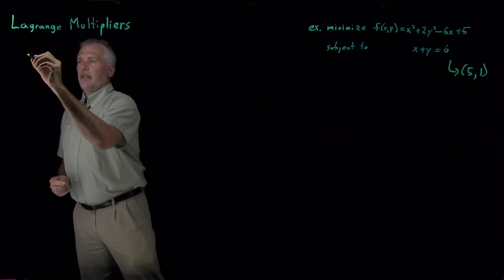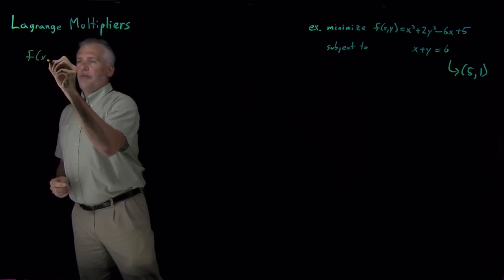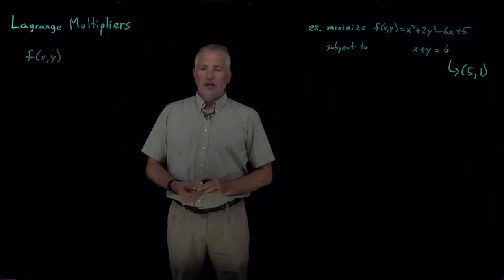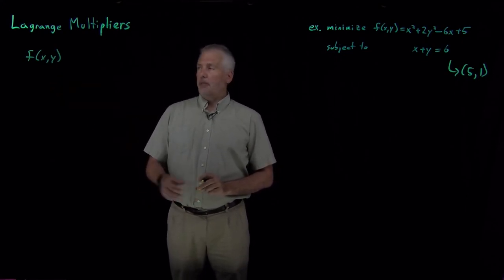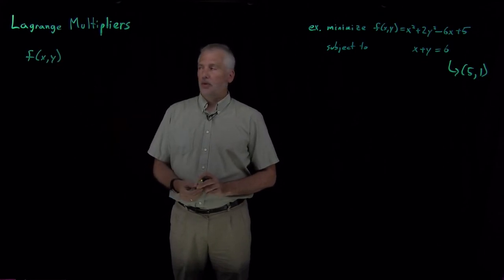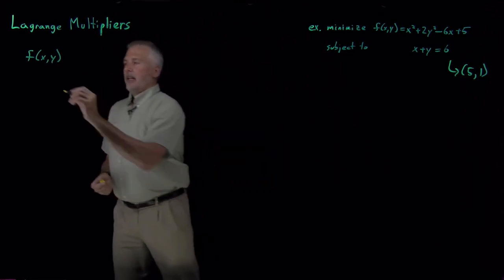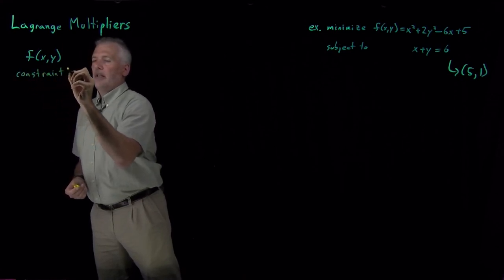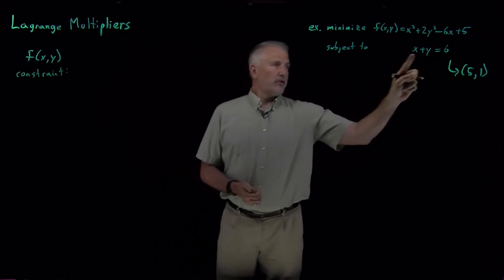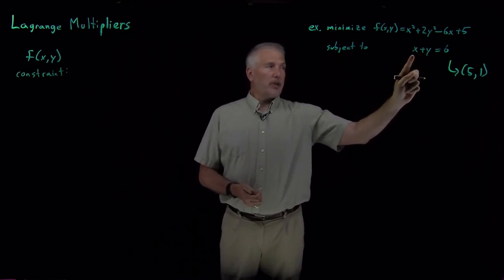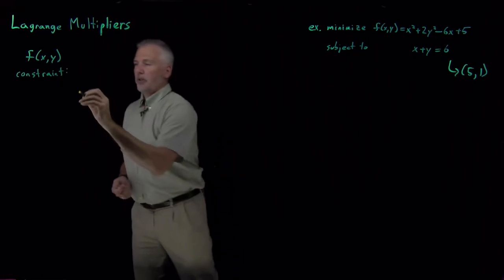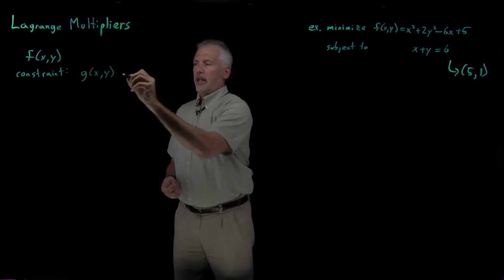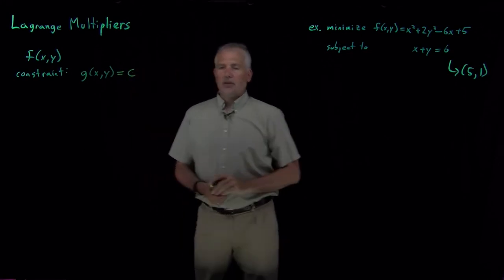We want to find the maximum or minimum of some function — maybe a two-dimensional function that depends on x and y, or possibly more variables. To keep things simple, we'll do the example with just two variables x and y. We want to do that subject to some constraint, and the constraint is also a function of x and y. That constraint function has to equal some particular constant value.